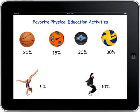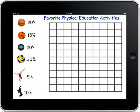Now, we are going to look at a real-life situation. The following shows the favorite physical education activities. You will notice that basketball has 20%, soccer 15%, hockey 20%, volleyball 30%, gymnastics 5%, and dancing 10%. We will then show all of these percentages on a hundredth grid. We will do that towards the end of this lesson.